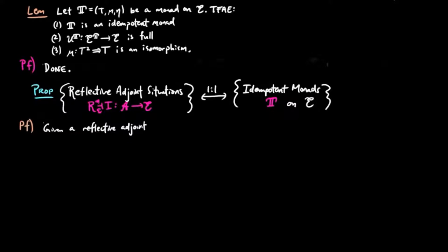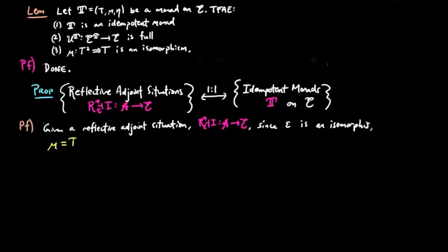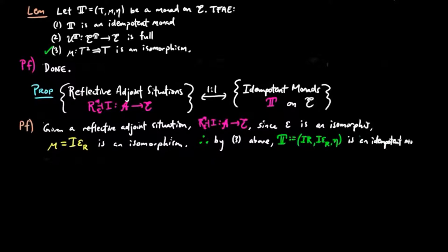For the proof: if we are given a reflective adjoint situation R, i over E, since the co-unit epsilon is an isomorphism by the definition of a reflective adjoint situation, we have the multiplication of the induced monad mu, which is equal to I epsilon R, is an isomorphism. Therefore, by condition 3 above, the induced monad on E is idempotent.